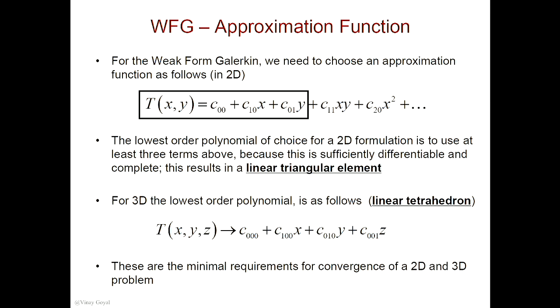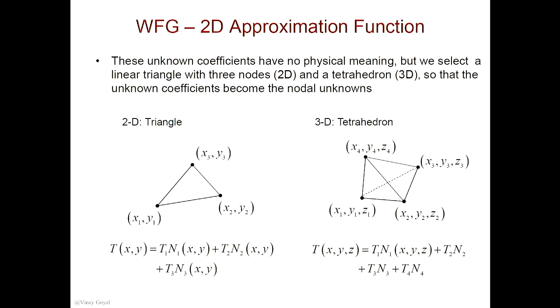But again, there's no physical meaning to these c's, and it's very difficult to construct and assemble the global system together. So for that reason, what we're going to do is look at things in terms of interpolation functions. In 2D, I'm hoping that the unknown coefficients now are T1, T2, T3 — so these temperatures at these nodes are the unknowns of the problem.